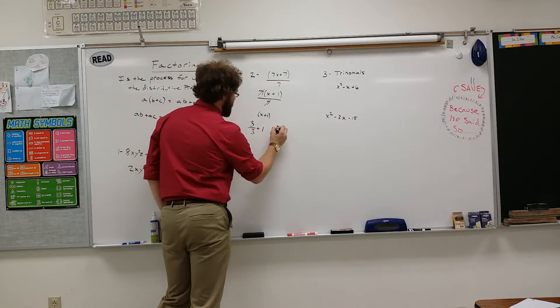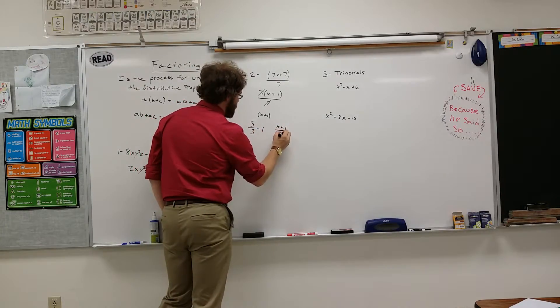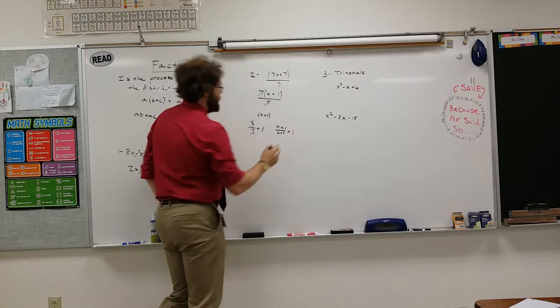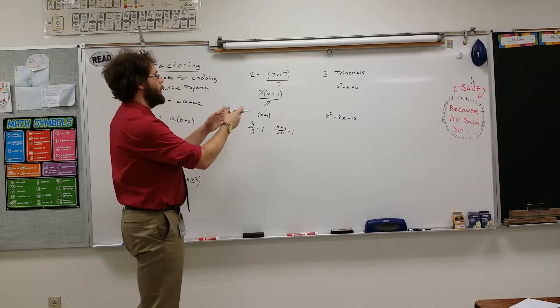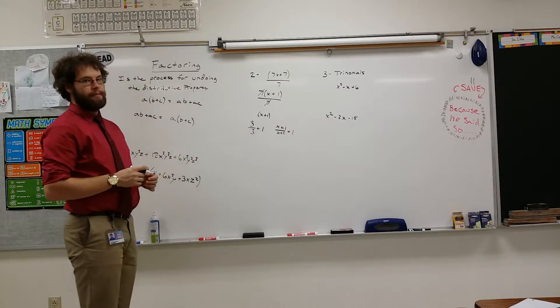Well, if, for instance, you had X plus 1 over X plus 1, that's also 1. So you can get rid of those things. That's called canceling. Because the 1 kind of falls into the, falls away.